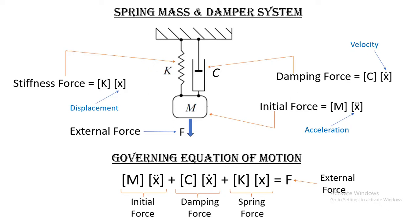Damping is the energy loss. In the absence of damping, the system will keep vibrating forever. The internal resistance force due to damping is the damping force, which is the product of damping coefficient and the velocity. So according to the governing equation of motion, the total external force F is the sum of the inertial force, damping force, and spring force.